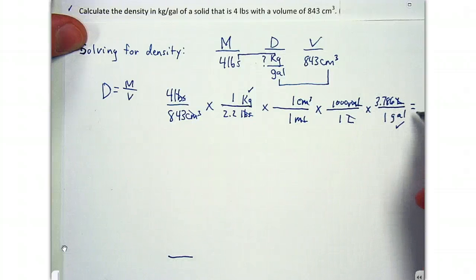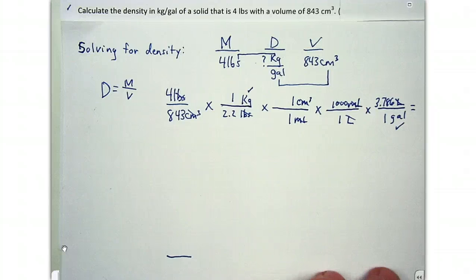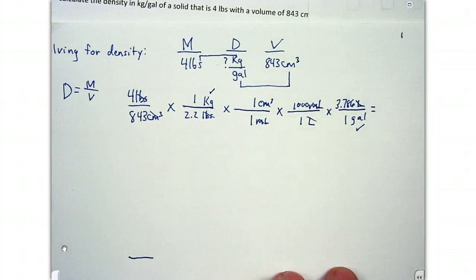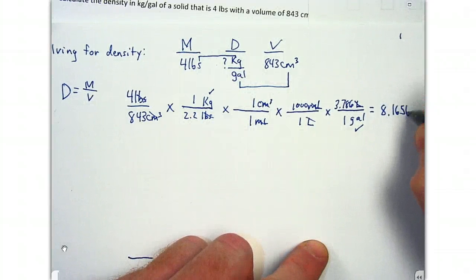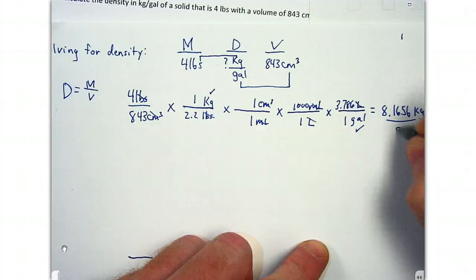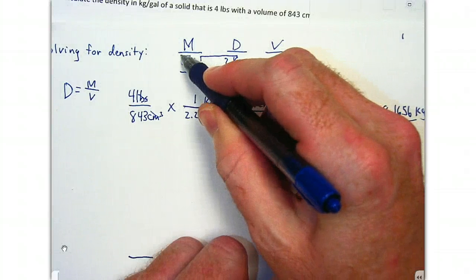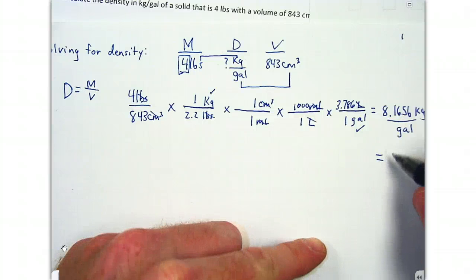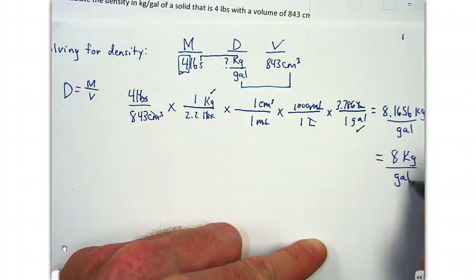We're left with kilograms per gallon — the proper units. We do the math and wind up with 8.1656 kilograms per gallon. But there's only one significant figure in the problem — the four pounds — so the answer is rounded to 8 kilograms per gallon.